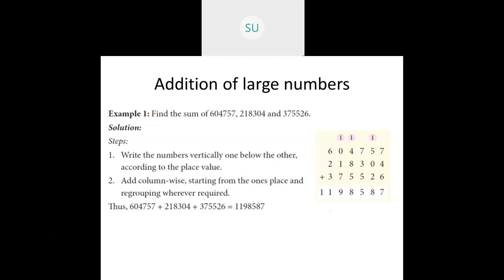Moving on to the last place, that is the lakhs place. So 6 plus 2 is 8, and 8 plus 3 gives us 11. So our answer here is 11,98,587.